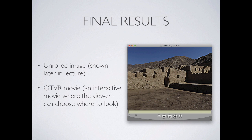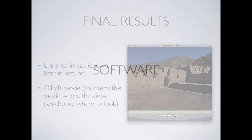We generally end up with two types of final results. One can be an unrolled image — a processed image where we take all of these pictures that make up a sphere, flatten them out, stretch them and lay them flat, like peeling a globe and laying it flat. Or we can have a virtual reality movie that's interactive and lets you choose what to look at in a particular scene. Both of those are available to you as an end result.